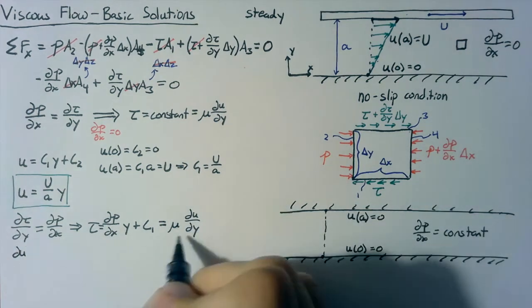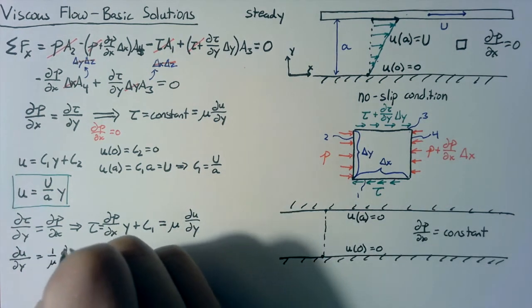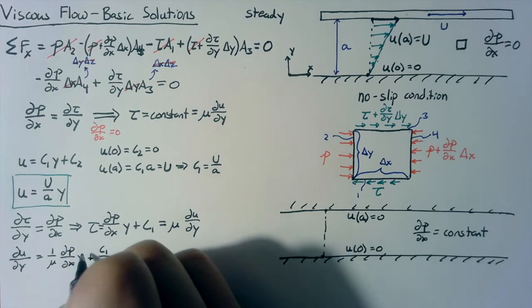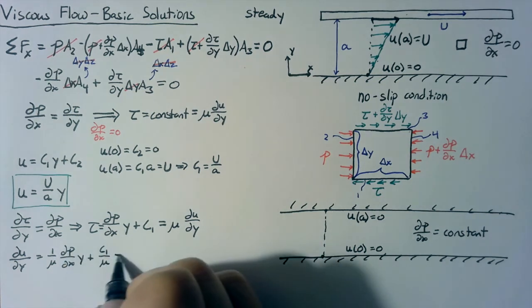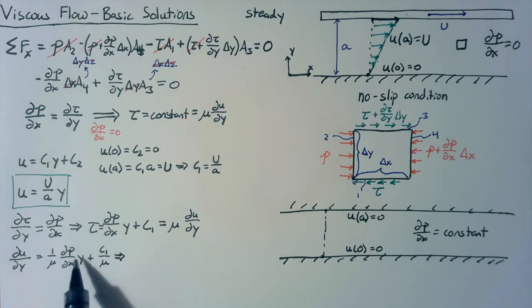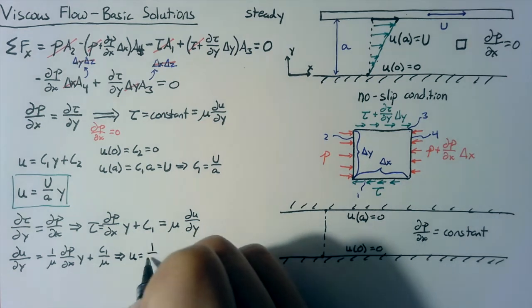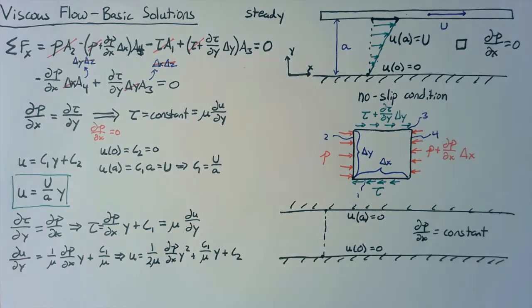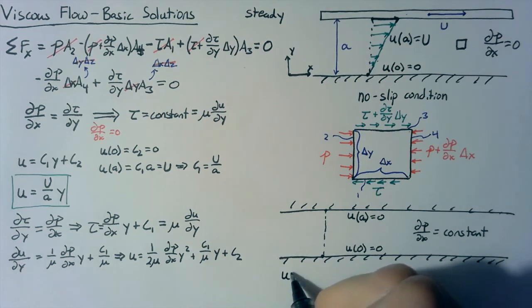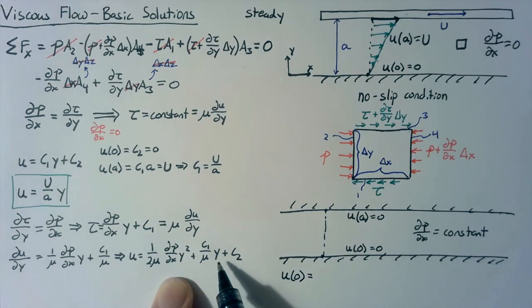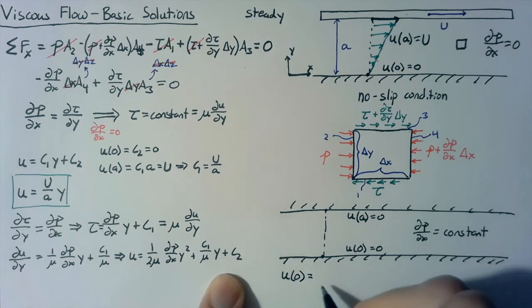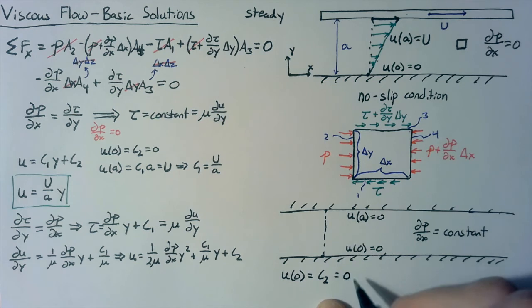And once again, this is equal to mu times du dy. So then we can write du dy just by dividing through by mu. And integrating gives us a y squared over 2 here, a y here, and an additional constant. So that's as far as we can get with integration. Let's go look at our boundary conditions. U of zero is going to get rid of both of our y's here. So we're just going to end up with c2. And so we know that c2 is equal to zero.